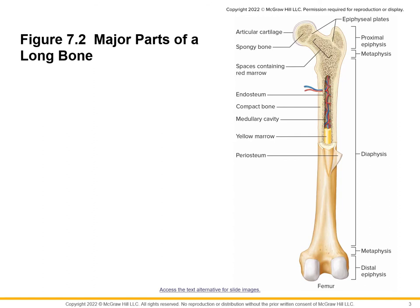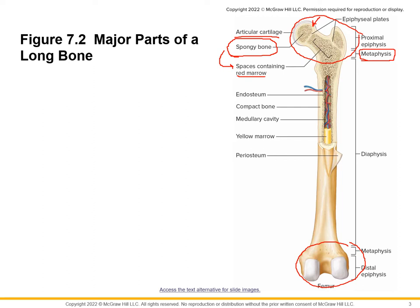Looking at this picture, we can see the epiphysis on one end and the epiphysis on the other. The epiphysis is covered with articular cartilage on the outside and filled mainly with spongy bone on the inside, with a small layer of compact bone. The metaphysis is just the dividing line between the epiphysis and the diaphysis. The diaphysis has the medullary cavity lined with endosteum, and the whole bone is covered with periosteum.